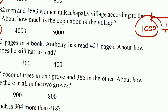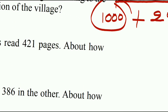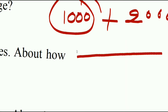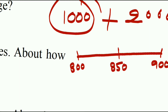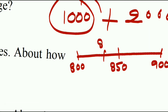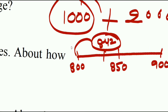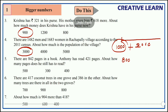Now let's find the nearest number for 842. The range is 800 to 900, with the middle number being 850. Now 842 comes before 850, so from this it is clear that 842 is nearer to 800. Instead of 842 we can take 800.